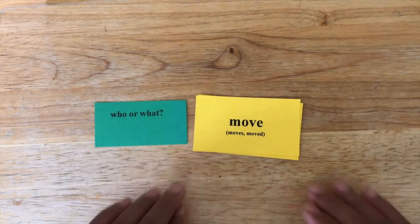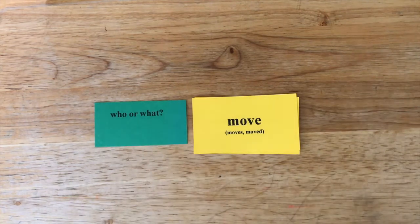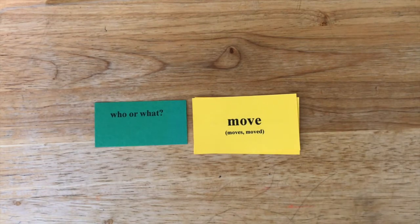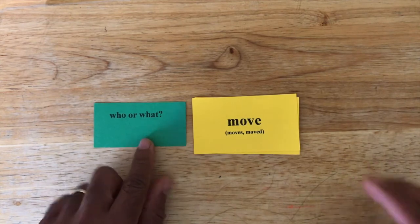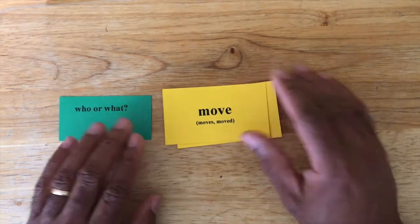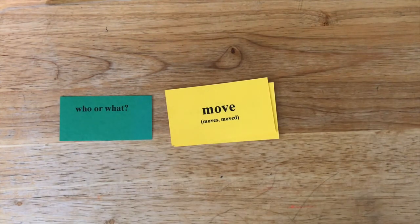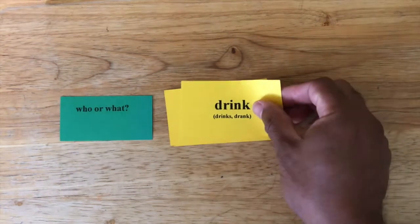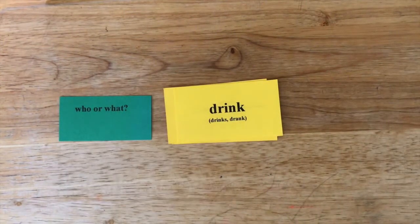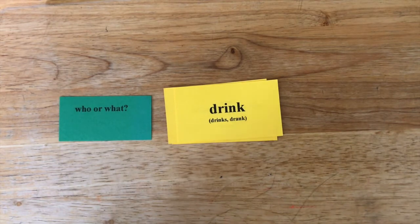Instead of just saying 'create a sentence with the verb move,' say 'who moved?' Maybe they spun the spinner and came to a yellow card, or you're just practicing different verbs this week. Take the who or what card, place it in front of your verb card, and have them create sentences. For example: who moved the books — John moved the books. Who drank the soup — Mary drank the soup.